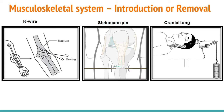For the Steinmann pin, after prepping and anesthetizing the patient, the physician will insert or drive the pin through a small incision from one end to the other. The physician then attaches a placeholder to hold the pin and confirms proper bone alignment through radiological images.